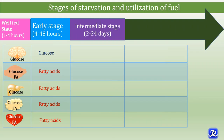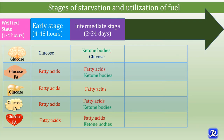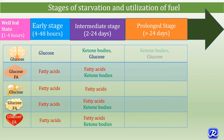In the intermediate stage, ketone bodies and glucose are utilized by the brain, fatty acids are utilized by the liver, and both fatty acids and ketone bodies are utilized by skeletal muscle, adipose tissue, and cardiac muscle. In the advanced stage, ketone bodies and glucose are the source of energy for the brain, while fatty acids are the source of energy for other organs like muscle, liver, adipose tissue, and cardiac muscle.